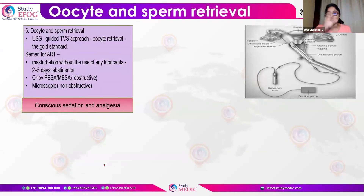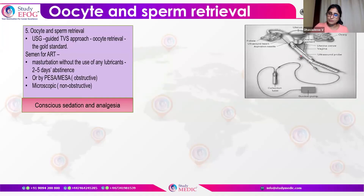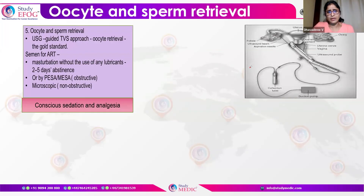After the trigger, it is followed by oocyte and sperm retrieval. Oocyte retrieval — the ovum pickup — is always transvaginal ultrasound guided. A needle guide is attached to the TVS probe, the needle is passed through the pouch of Douglas, and oocytes are picked up from the stimulated ovaries on both sides. This is the gold standard technique.